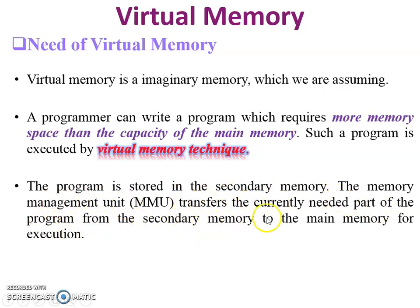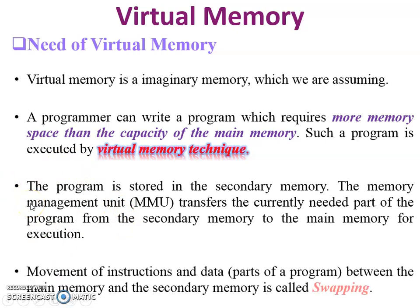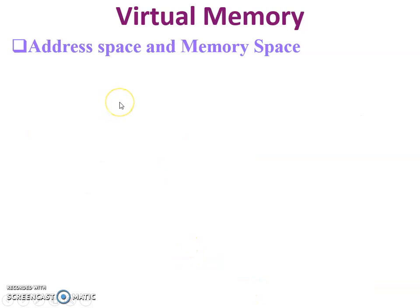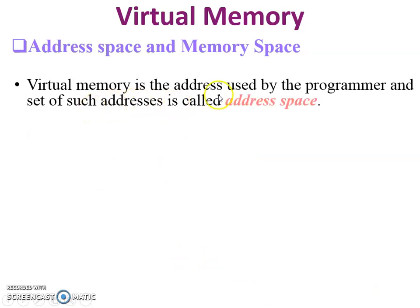During execution, the program is stored in the hard disk. The processor requires some part of data or code — instructions — which are available in RAM. The movement of instructions and data between main memory and secondary memory is called swapping.